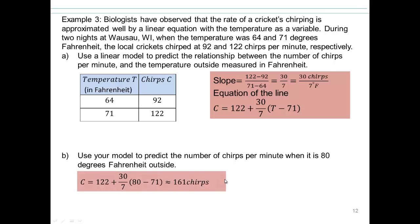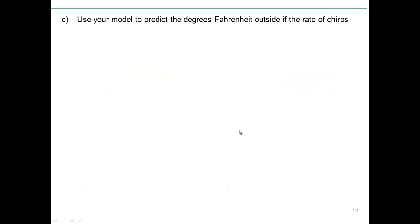All right, let's take a look at part C, which is asking you some more questions based on this equation here. So write this equation down so you can answer part C. We are now asking you, use your model to predict the temperature outside if you could hear the rate of chirps per minute. So let's say you could hear 150 chirps per minute. What do you think is the temperature outside?